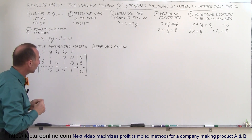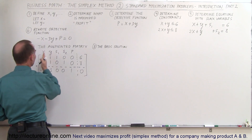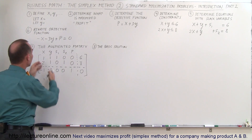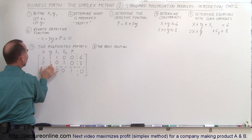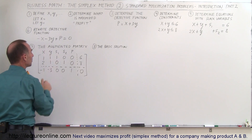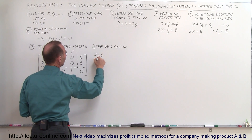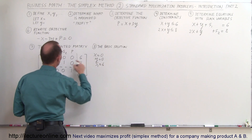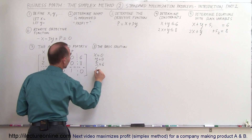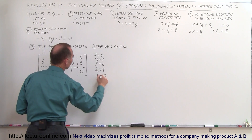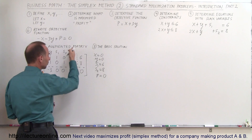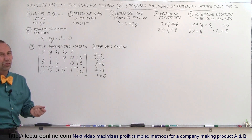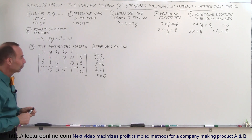The basic solution at this point: whenever a column does not have a single 1 with all zeros, that variable equals zero. Since the x and y columns don't have that form, x equals 0 and y equals 0. Slack variable S1 equals 6, slack variable S2 equals 8, and profit P equals 0. This is just the basic starting solution — not a useful answer yet.